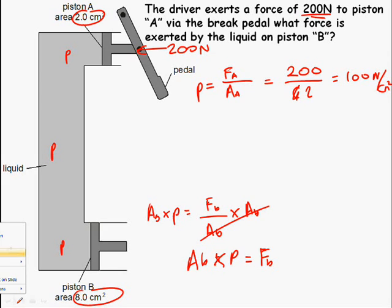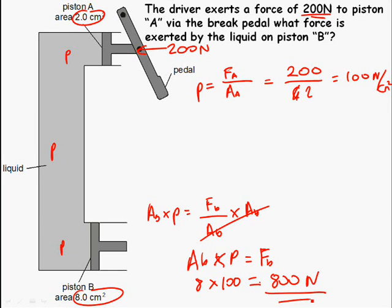So stick the numbers in. The area here, it says 8 centimeters, 8, and I can stay in centimeters because I use centimeters here, multiplied by the pressure, 100 newtons per centimeter, is equal to my force. 8 times 100 is 800. What are the units? Newtons. So that's my final answer.